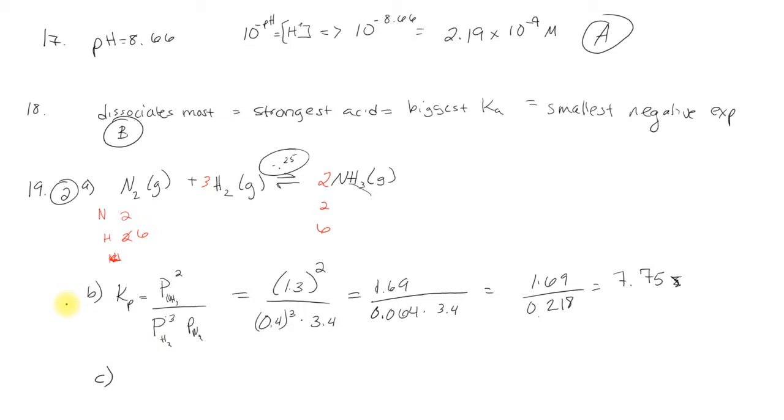This one's going to be worth one point for setting up your statement here, one point for plugging everything in correctly. I'm not going to emphasize sig figs, so really this will just be two points. In C, we're going to find the KC of the reaction based on the KP. I know we have a handy equation that relates KP and KC.